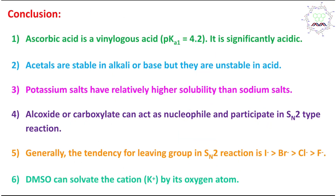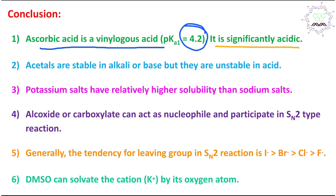In conclusion, ascorbic acid is a vinylogous acid with a pKa of 4.2, making it significantly acidic. Acetic acid has a pKa of 4.74, so ascorbic acid (Vitamin C) is more acidic than acetic acid — we are talking about the first deprotonation. So it is a significantly strong acid.